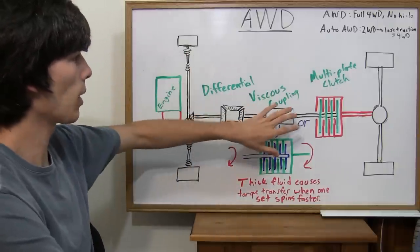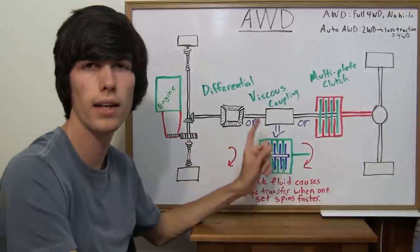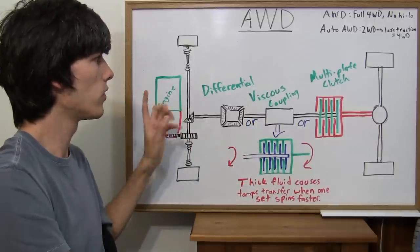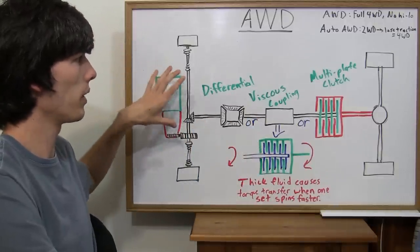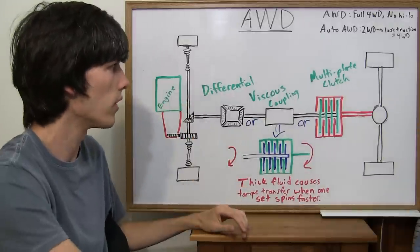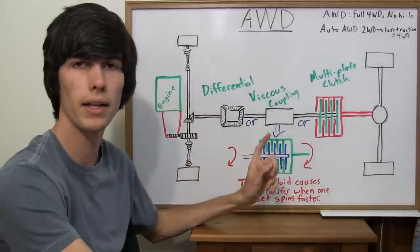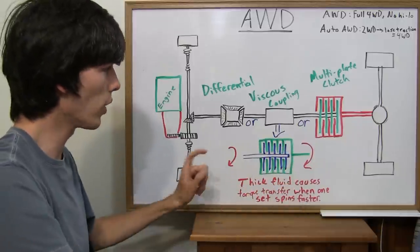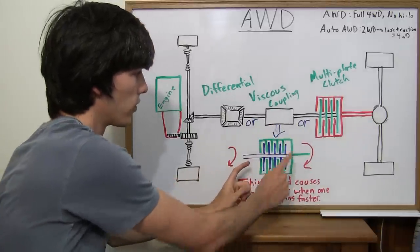Okay, so viscous coupling, that's another option. The great thing about a viscous coupling is if a set of tires starts to spin with an open differential, it'll just keep spinning and you'll pretty much just be immobilized. Whereas with a viscous coupling, torque is transferred to the tires that are not spinning.